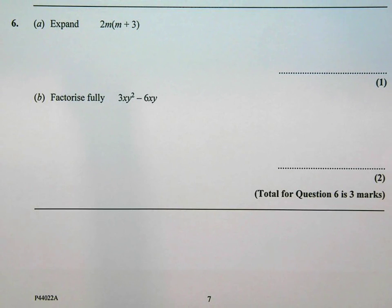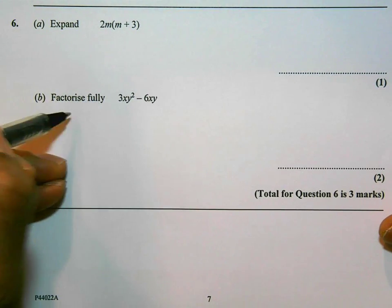This is question number 6 on the June 2014 non-calculator paper. This question has two bits: expand for part A and part B fully factorize.